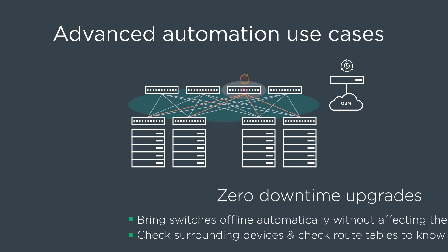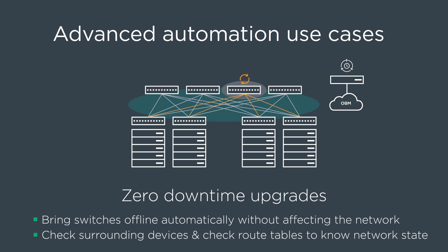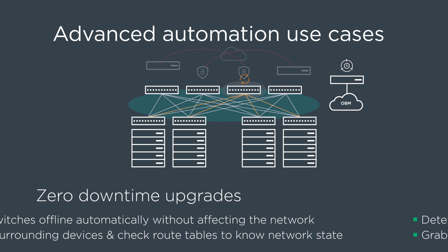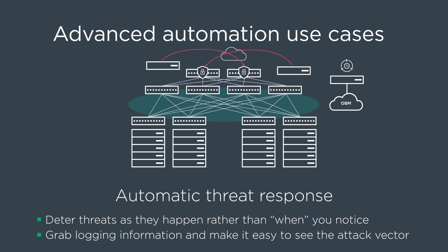You can implement zero downtime upgrades by leveraging the automation infrastructure to reroute traffic or change the traffic profile, and then implement changes on a specific network device that is no longer in the actual traffic flow. And even more interestingly, you can implement automatic threat responses by grabbing different levels of information and making it easy to identify the attack vector.